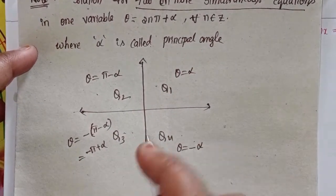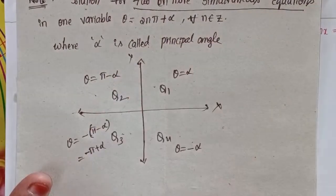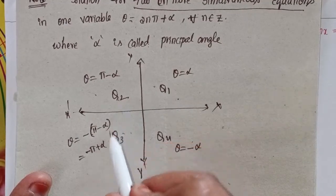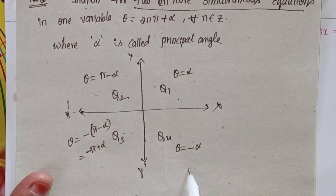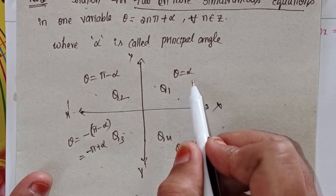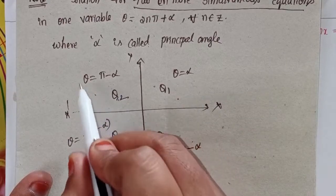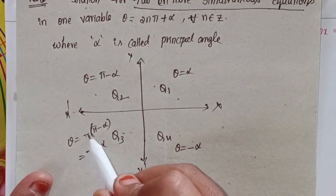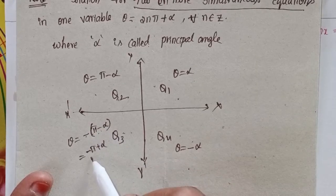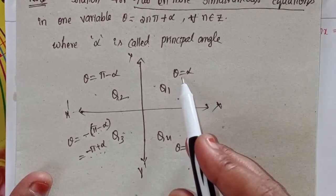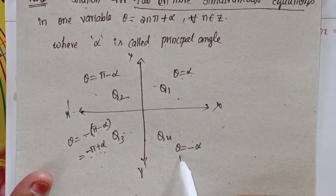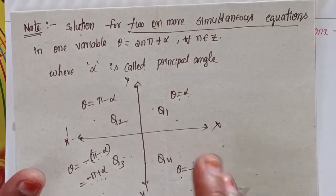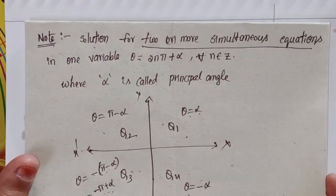I'll take here the x-axis, y-axis, x-dash axis, and y-dash axis — Quadrant 1, Quadrant 2, Quadrant 3, and Quadrant 4. Here theta equal to α, here 180 minus α, here negative of π minus α, that means minus π plus α, and here theta equal to minus α. Remember these conditions.